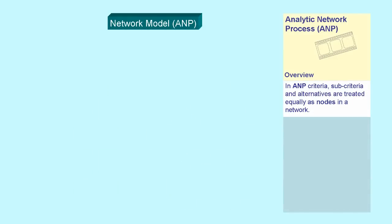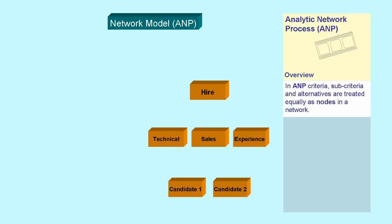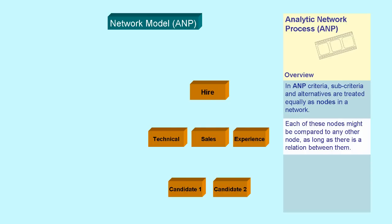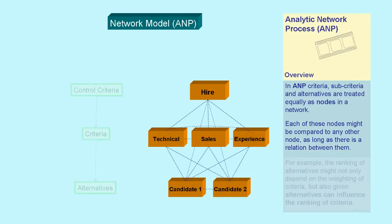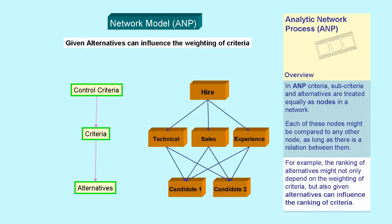In the Analytic Network Process (ANP), criteria, sub-criteria, and alternatives are treated equally as nodes in a network. Each of these nodes might be compared to any other node, as long as there is a relation between them. For example, the ranking of alternatives might not only depend on the weighting of criteria, but also given alternatives can influence the weighting of criteria.